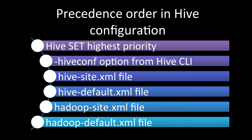After that, we have the customization file called hive-site.xml, which is the configuration file for a specific site of Hive — that is third in the priority order. Then we have hive-default.xml, which holds default values for your Hive installation, and finally hadoop default.xml. This is the order in which the precedence takes place, with the Hive shell set command having the highest priority.